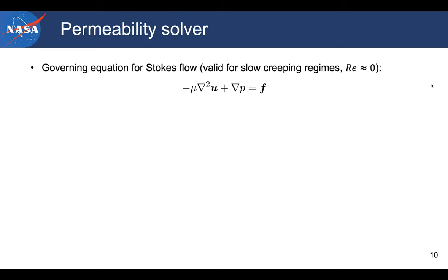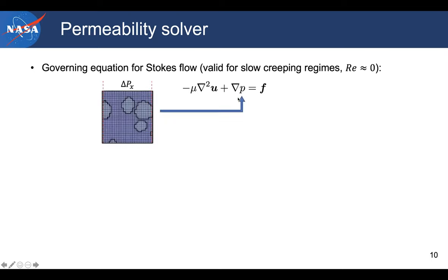There are two ways that you can approximate and solve this function and compute the permeability. One way is you can impose a pressure gradient in the three Cartesian directions. And that way you can basically create a velocity field through your domain. And then once you create that, your mean velocity throughout your domain is going to give you the effective permeability for slow creeping regimes.